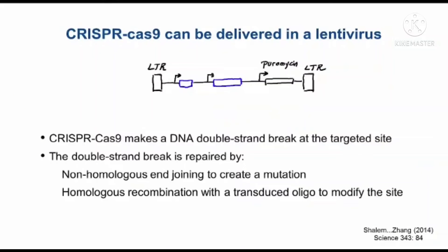CRISPR-Cas9 can be delivered in a lentivirus. Here I'm showing a rudimentary lentivirus with two long terminal repeats at each end and a puromycin gene that can be used to select for cells that take up the lentivirus. The guts of the system are two transcriptional cassettes: one cassette encodes the single-guide RNA, and the other encodes the Cas9 protein. The CRISPR-Cas9 can make DNA double-strand breaks at the target site, then the double-strand break is repaired by non-homologous end joining to create a mutation.